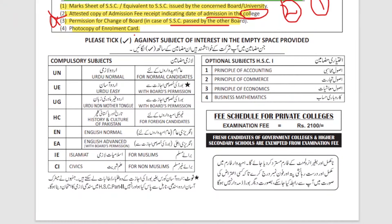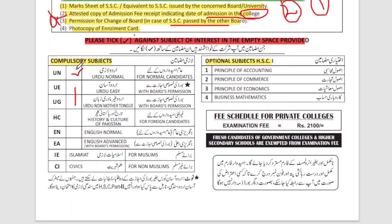Now let's talk about how to fill in the subjects and how to choose them. Click on the subjects you have to appear in for the exam. For optional subjects, first click on Urdu Normal. If you are a normal student and don't have special permission, choose Urdu Normal. If you live in Karachi and speak Urdu, click on Urdu Normal. H.C. (History and Culture) is a subject you generally don't study in Pakistan, so leave it blank. PST should also be left blank for second year; if you live in Karachi or Pakistan, click on PST.